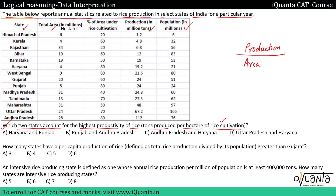For example, for Himachal Pradesh, total area in million hectares is six. The area under rice cultivation is 20% of this — so 20% of six is six divided by five, which is 1.2. So area here is 1.2 million hectares, where million is 10 to the power 6 hectares.